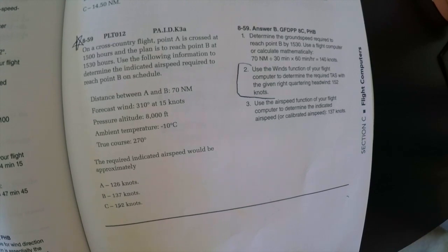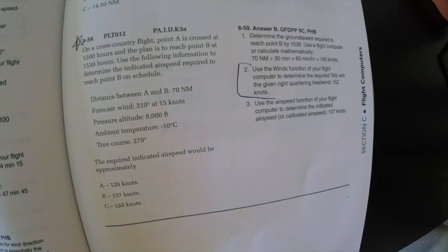Now we're going to do problem 8-59. On a cross-country flight, point A is crossed at 1500 hours, and the plan is to reach point B at 1530 hours. Use the following information to determine the indicated airspeed required to reach point B on schedule.